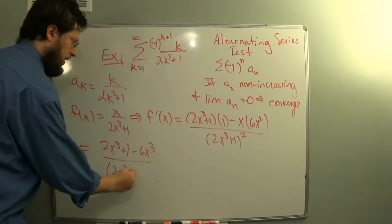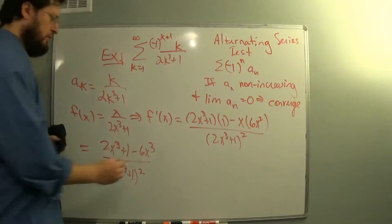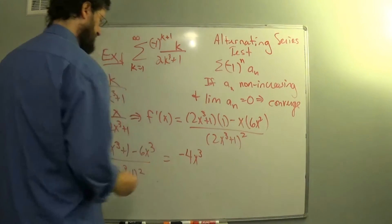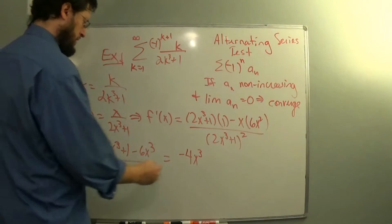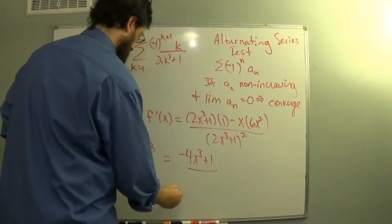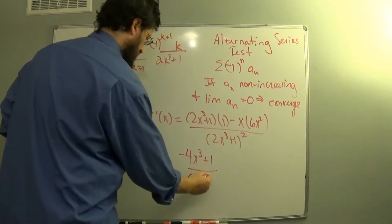We'll leave it there, but I don't really care about it because since it's a squared, it's always positive. So that's negative 4x cubed plus 1, all over 2x cubed plus 1 squared.